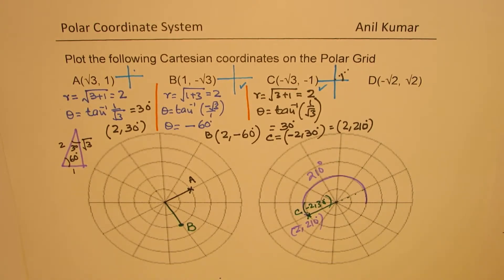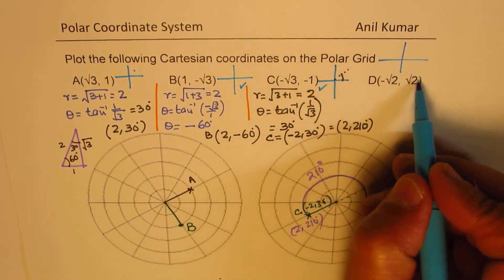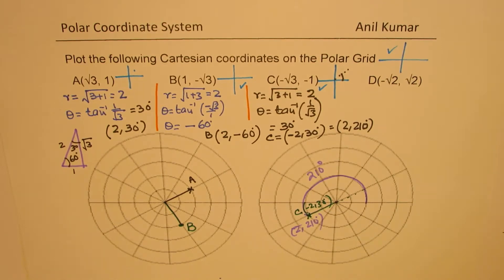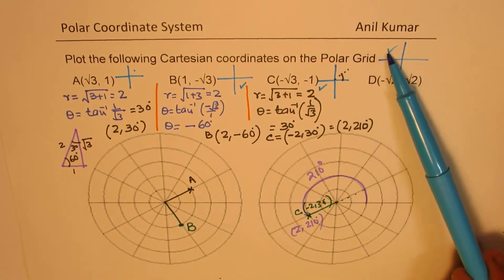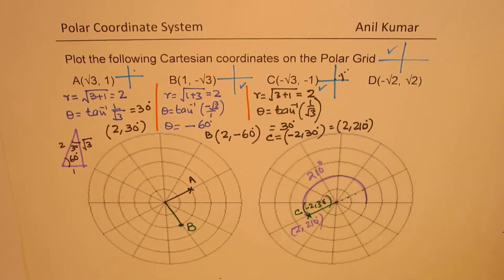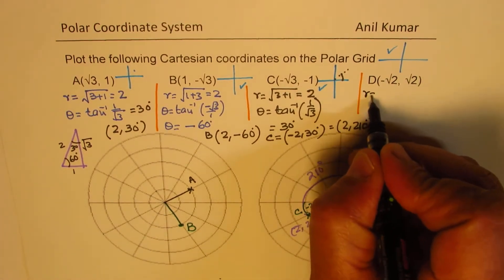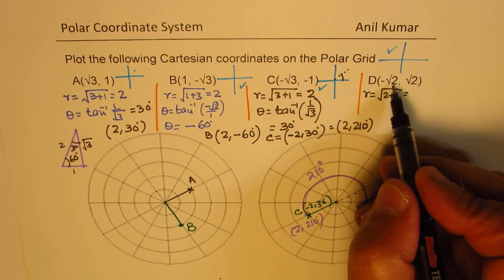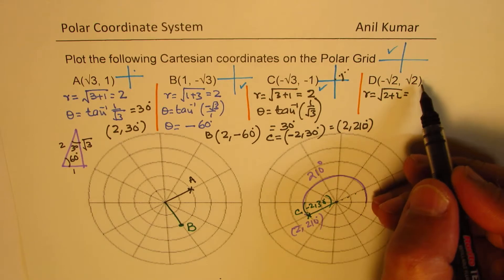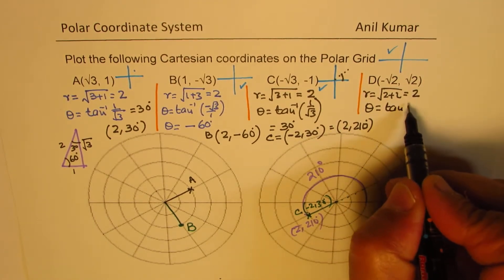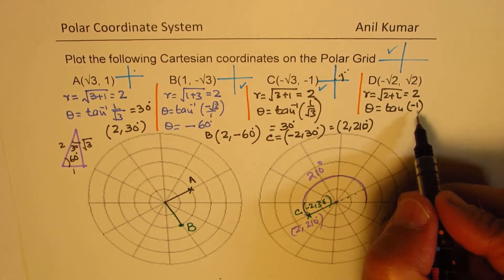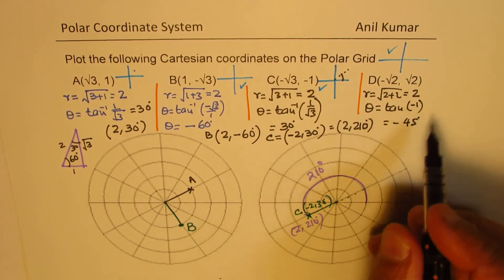This is a very critical concept to understand. The last question — take it as your test, pause the video and answer it. Point D has a negative x-value and positive y-value, putting us in quadrant 2. The value of r is √(√2² + √2²) = √(2 + 2) = √4 = 2. Theta equals tan inverse of (√2 / -√2) = tan inverse of -1, which is -45 degrees.